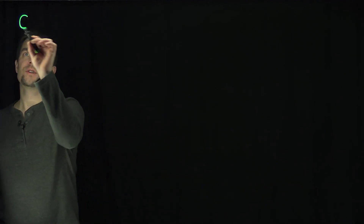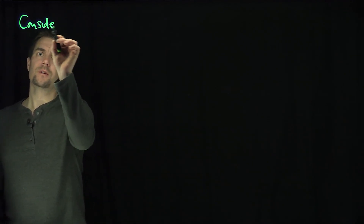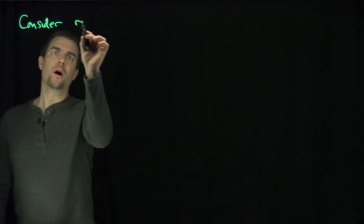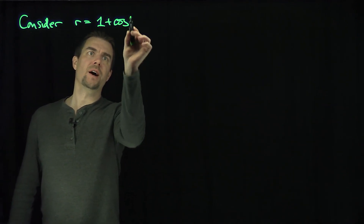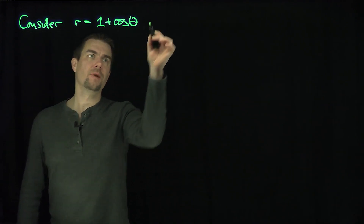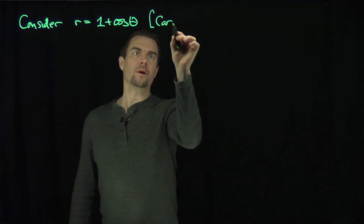Hello, students. In this video, we'll see how to compute the area inside a cardioid and the arc length of a cardioid. Cardioids are special polar curves. We're going to consider the polar curve r equals 1 plus the cosine of theta. This curve is called a cardioid.